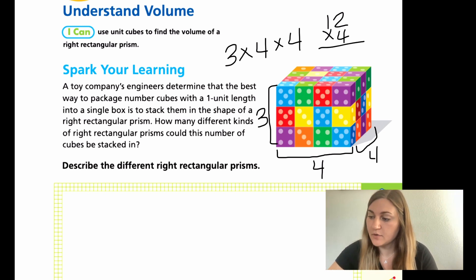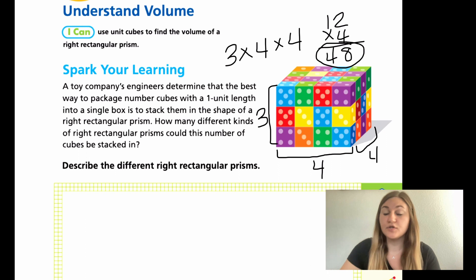So 2 times 4 is 8 and 4 times 1 is 4, meaning that my volume or the total amount of unit cubes is 48. So what they're asking me in this problem is how many different variations can I stack these cubes so that I still have the 48 cubes.